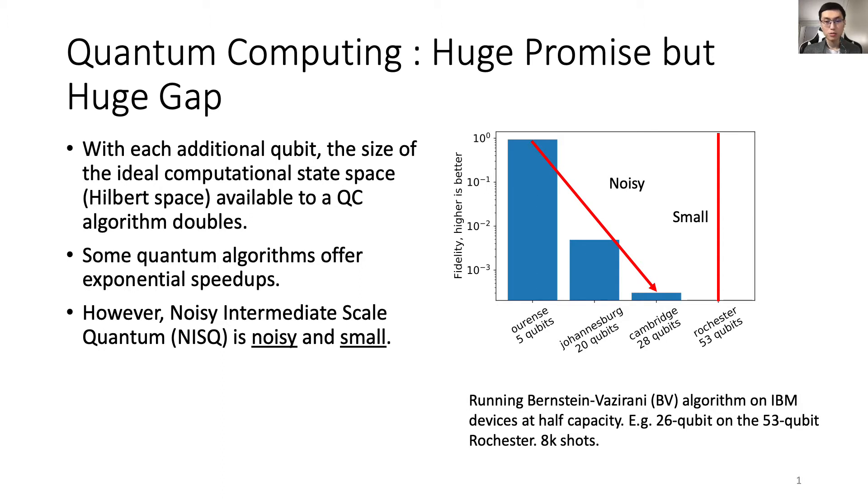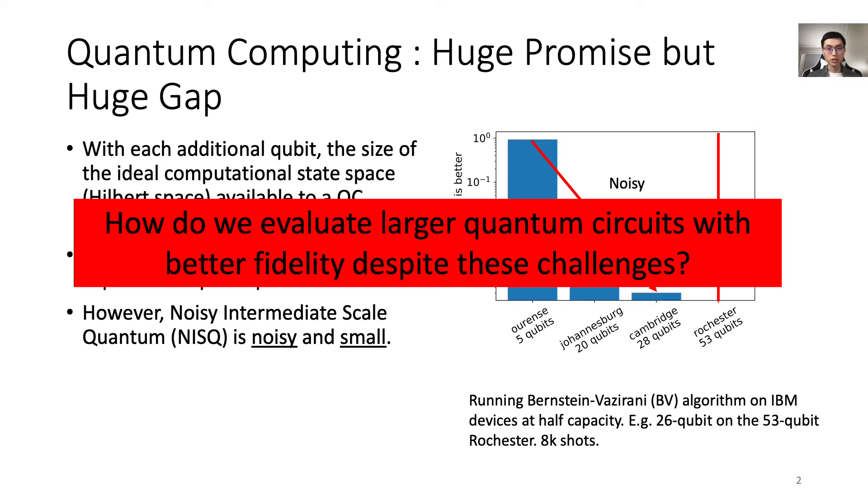Furthermore, the 53 qubit device is hardly limited to run circuits smaller than 53 qubits. Even just one more qubit is currently impossible. The short story is, we want larger devices, but they're also much noisier. This shows that there's a huge gap between the quality and size of the quantum devices we have nowadays, and the requirements of many proposed use cases for QC. The question is, how do we evaluate larger quantum circuits with better fidelity despite these challenges?